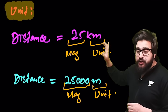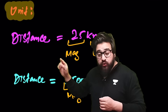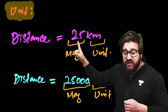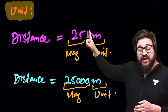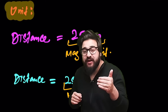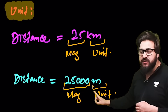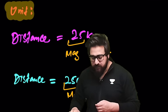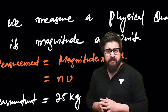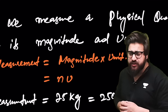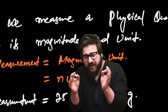What is a unit? If distance equals 25 kilometers, then 'kilometer' is the unit and '25' is the magnitude. 25 kilometers means 25 is 25 times greater than one kilometer. Similarly, 25,000 meters — here 'meter' is the unit. Always remember: measurement = magnitude × unit, written as N × U.